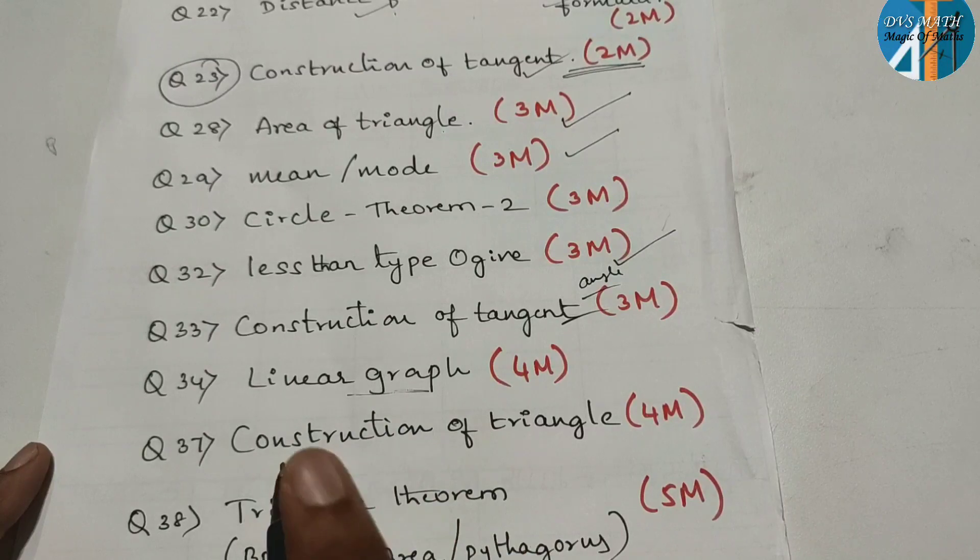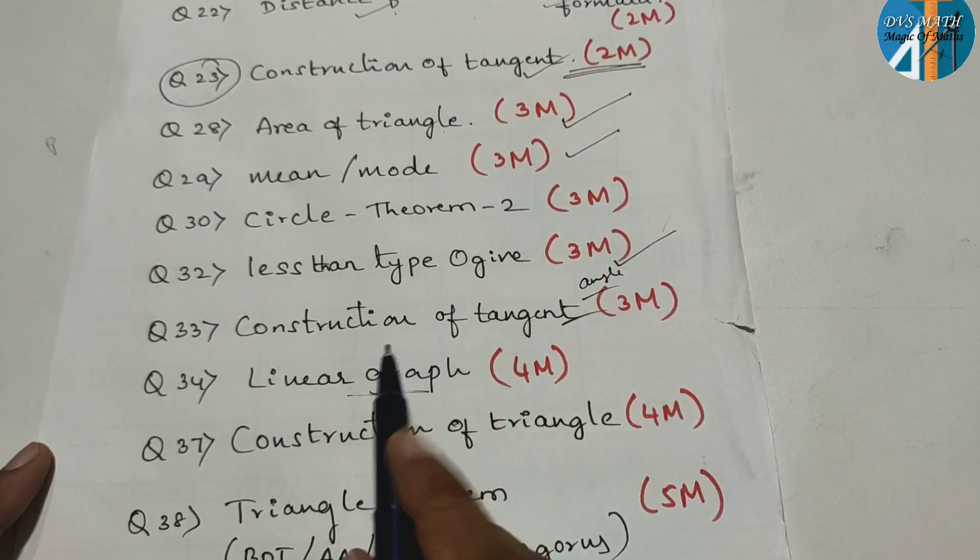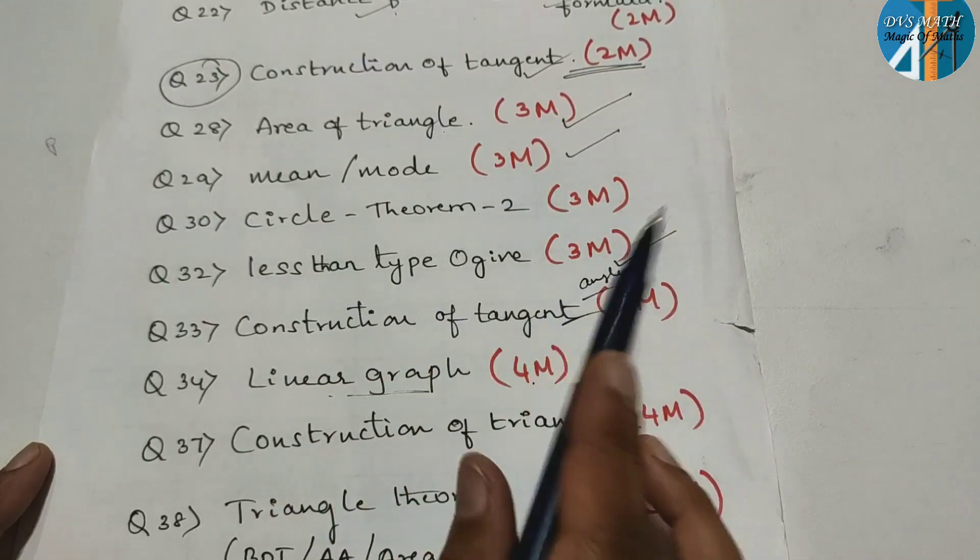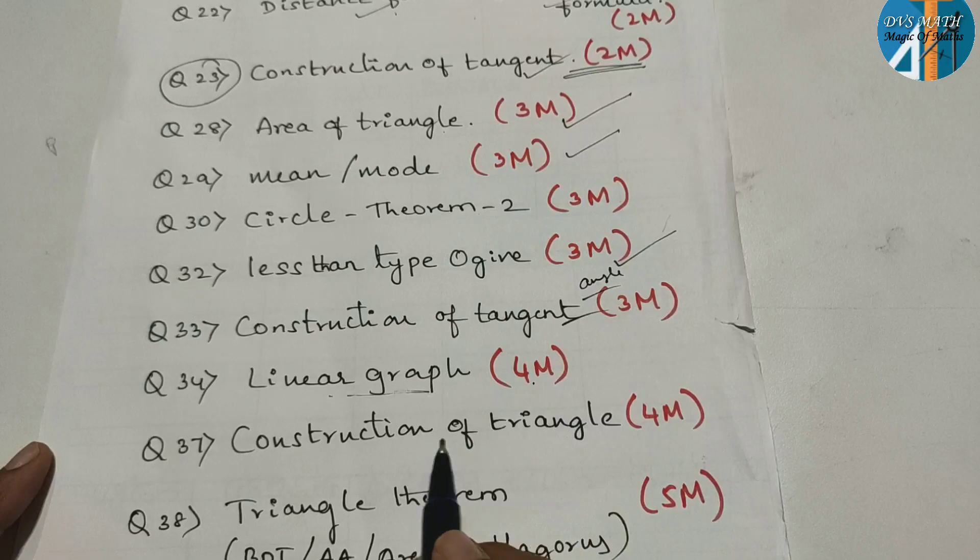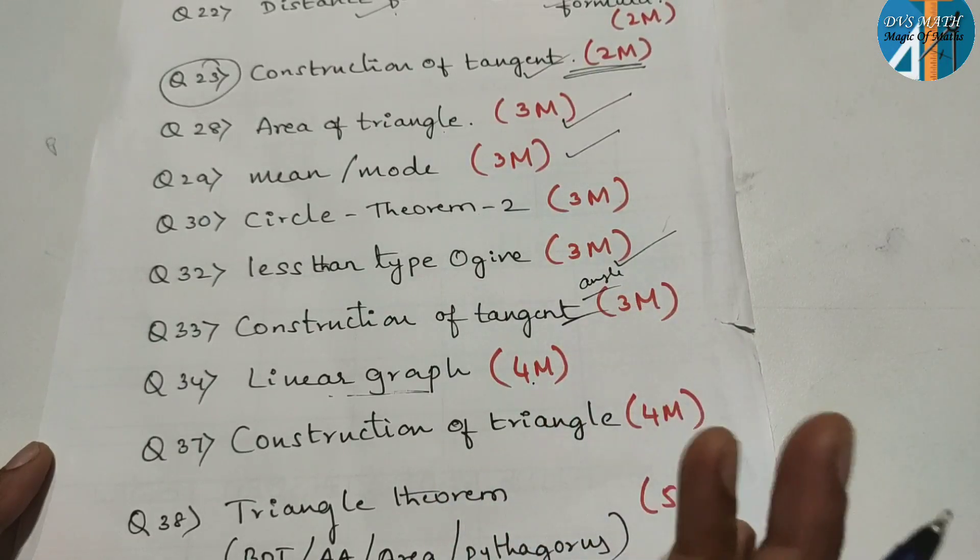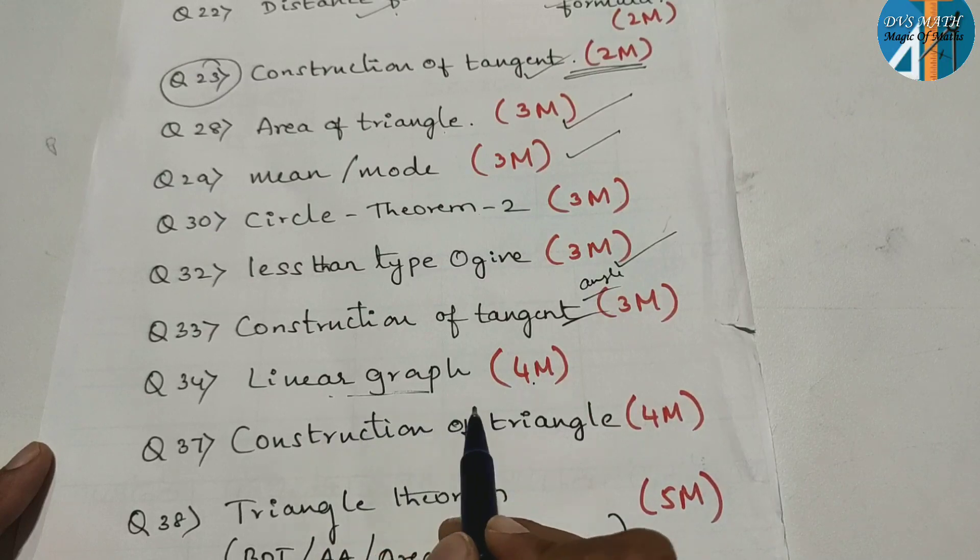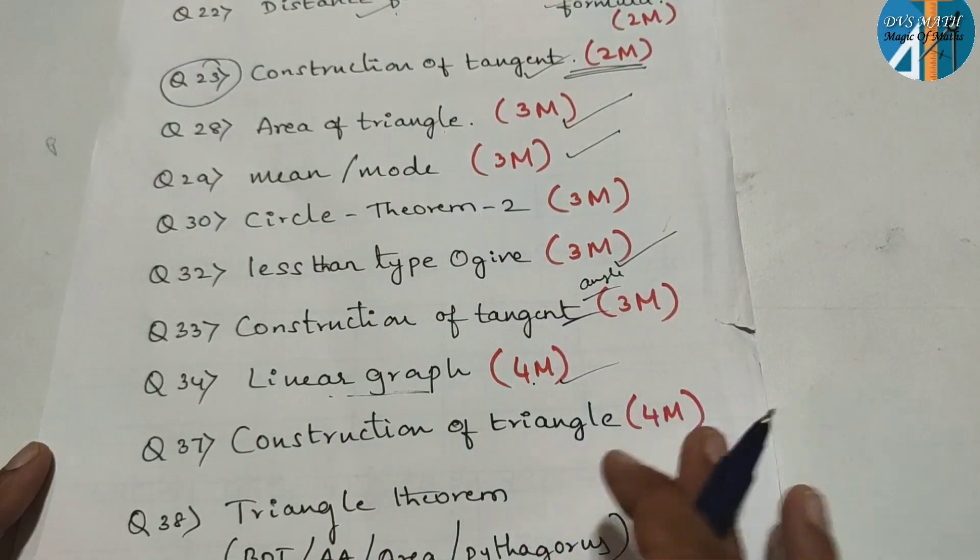Next one, linear graph. So this is, ogive graph or linear graph. Linear graph 4 marks, ogive graph 3 marks. 7 marks guarantee. But it is a bit difficult. How to solve less than type or more than type, or linear graph how to plot, I have already shown. So here 4 marks.